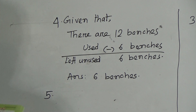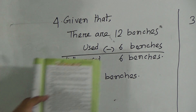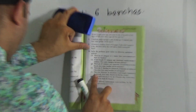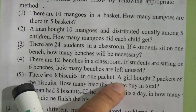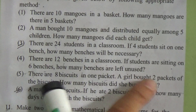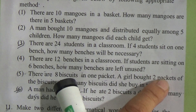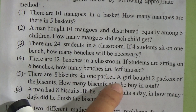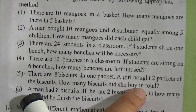Now question number 5 — look here. Question number 5 is: There are 8 biscuits in 1 packet. A girl bought 2 packets of biscuits. How many biscuits did she buy in total? We can write here: Given that there are 8 biscuits in one packet and she bought 2 packets.